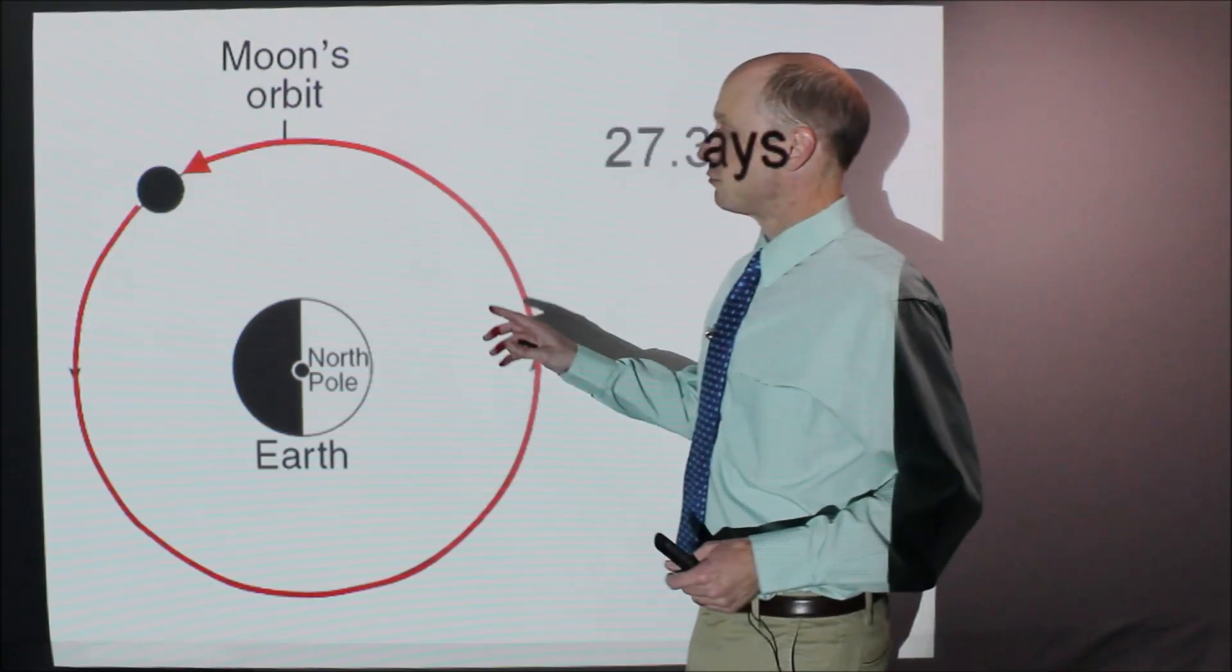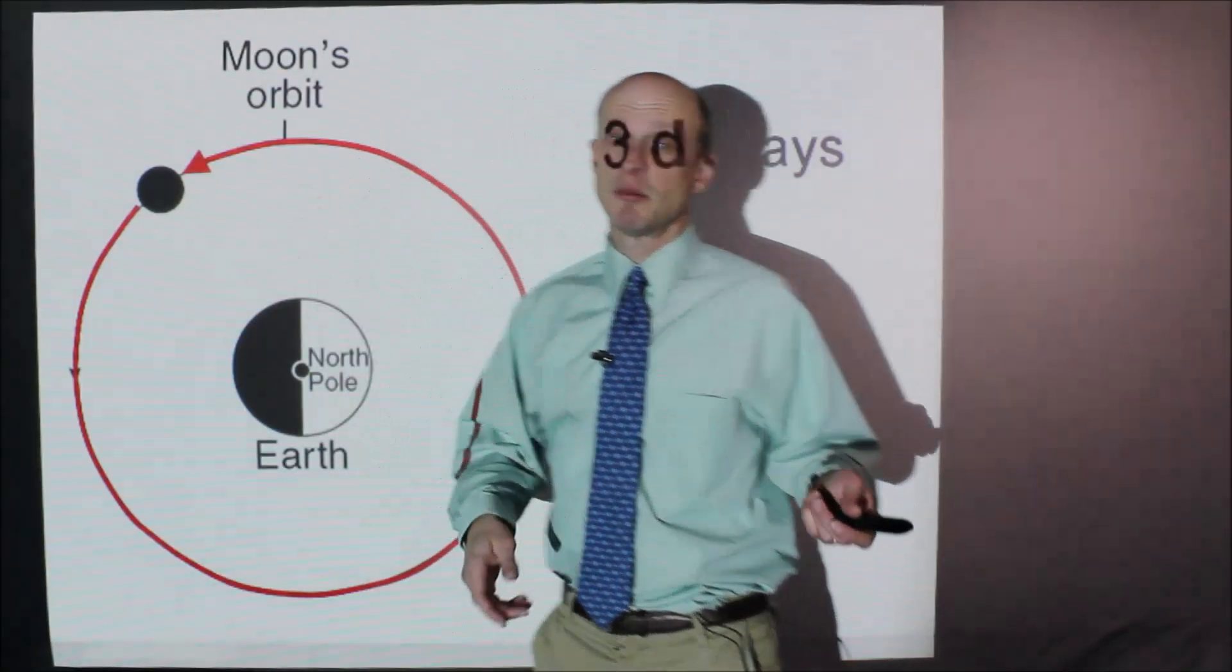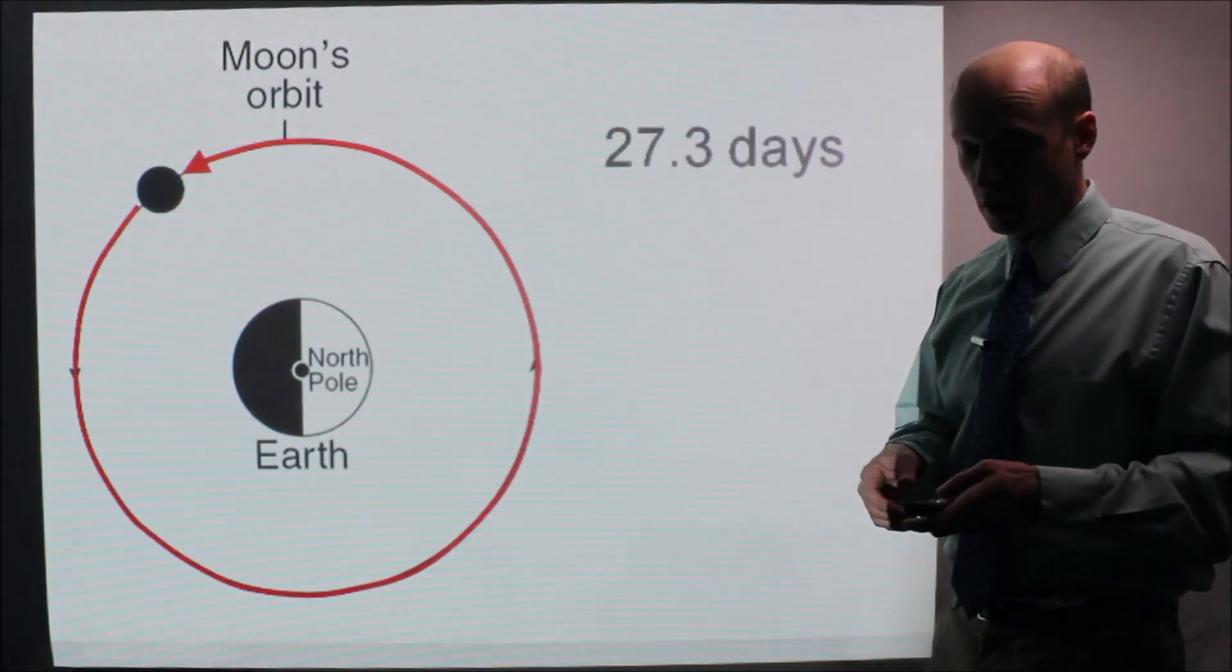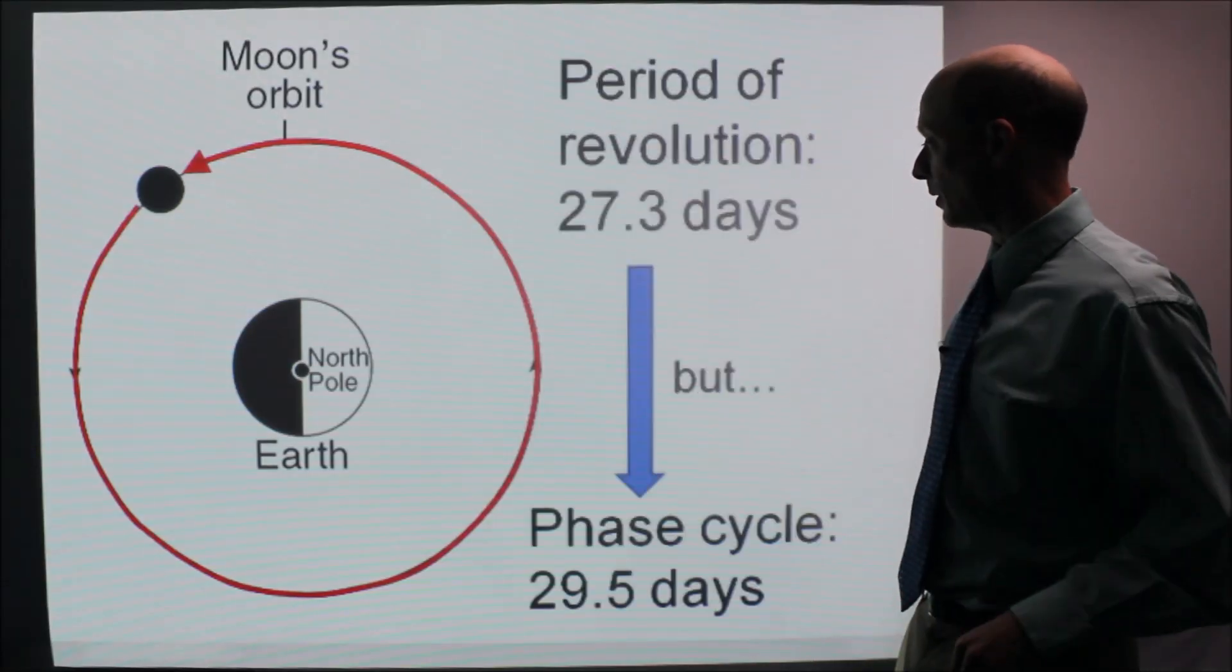And it takes, for the red line to go from this location here all the way back around, it takes 27.3 days. That is period of revolution. It takes 27.3 days. And that's in the reference table.